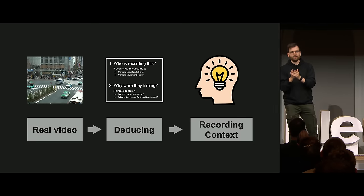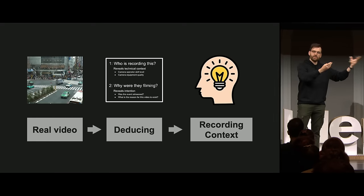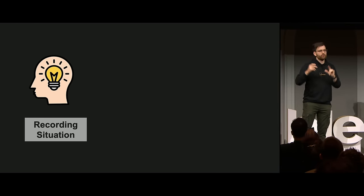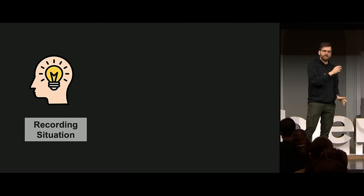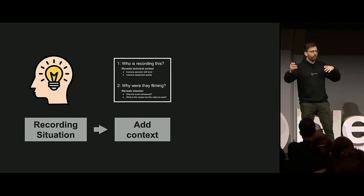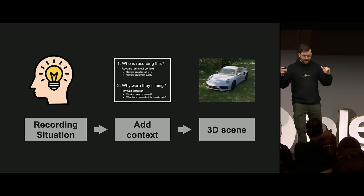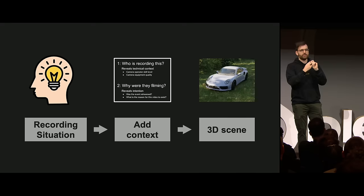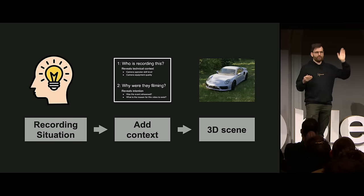This next part is the entire reason why I'm standing here - the whole point of my presentation. I want you to take this process and reverse it. Start with the recording situation: imagine somehow someone brought a real camera to a real place and started recording. Fill the gaps and add the context - who might be recording this situation, and what could possibly be a reason to bring a camera to this place? Then apply all those thoughts into your 3D scene, which will change your mindset completely because now you have to deal with the consequence of having a camera operator in your scene.